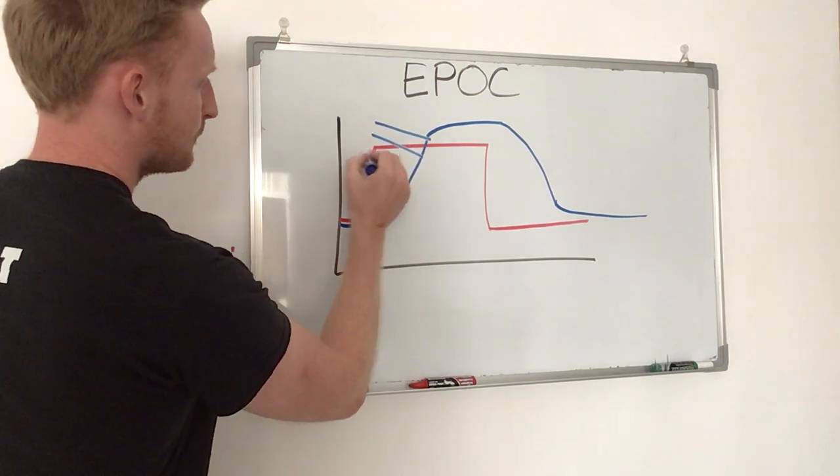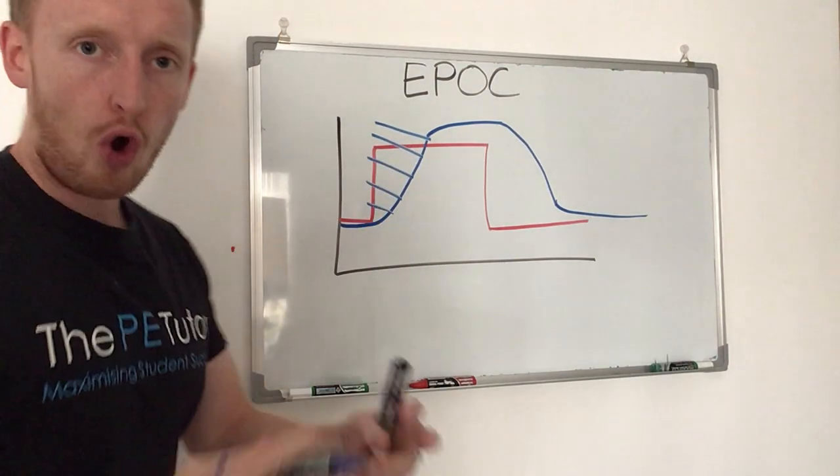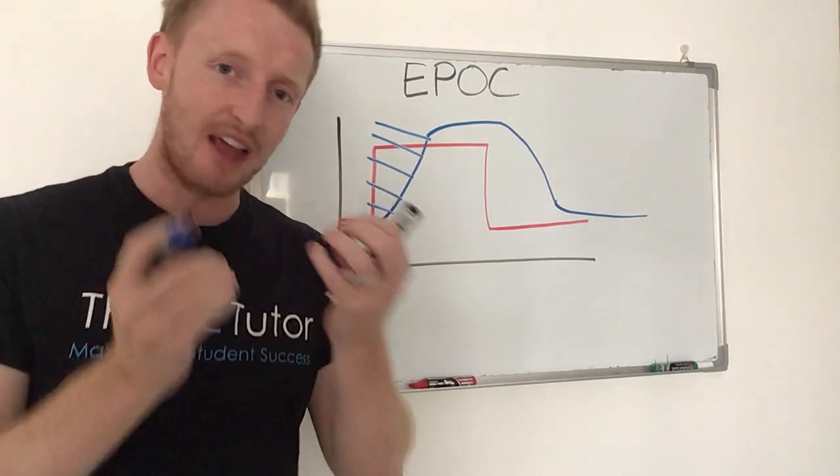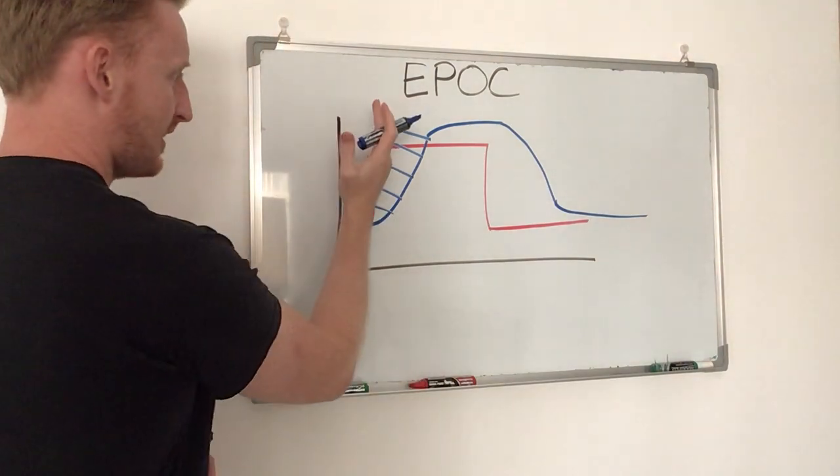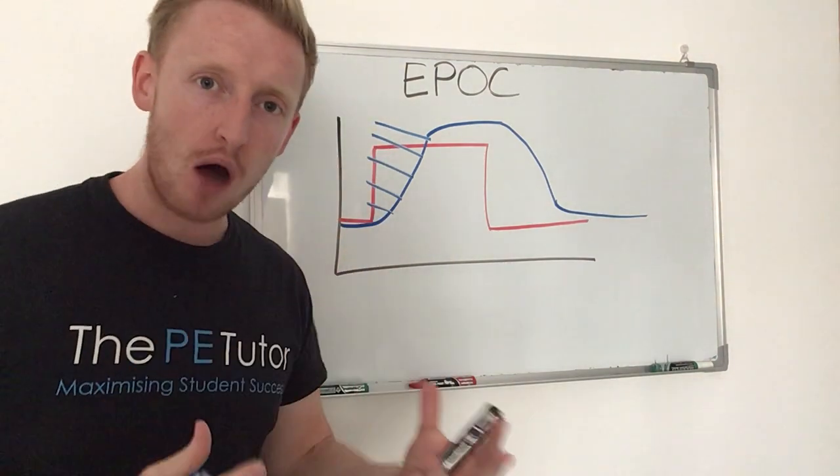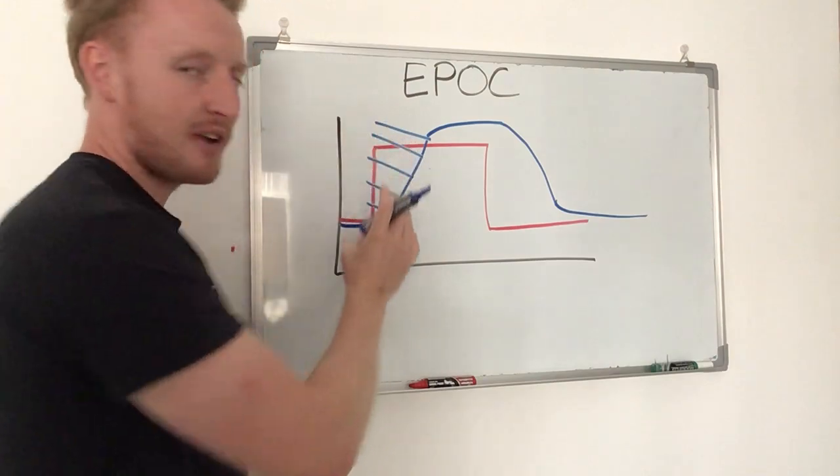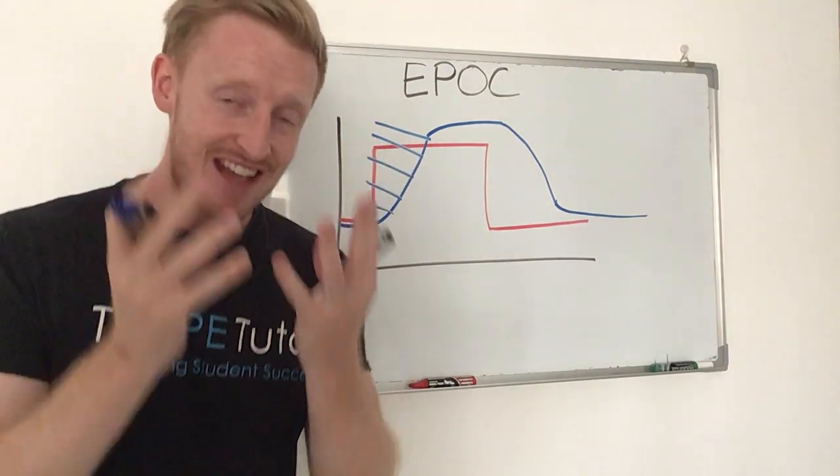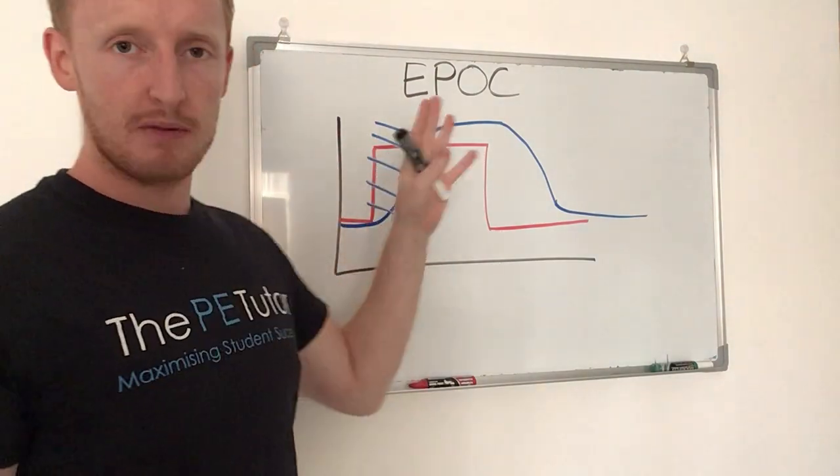This zone here is known as our oxygen debt or oxygen deficit. We have started exercise, we have oxygen demands around the body, but our respiratory and cardiovascular systems haven't yet caught up with our moving body.